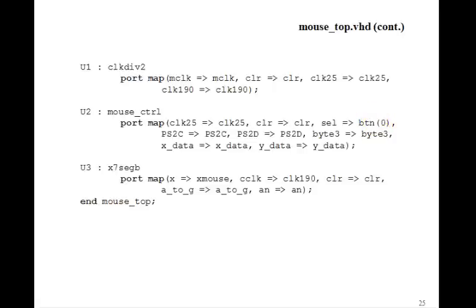This is the mouse controller. In the book there's another example of using this mouse controller to move the sprite initials from lesson 106. You could use this mouse controller to move any sprite on the VGA screen, including one from the block ROM. So if you made a little picture of yourself, you could move it around on the screen using this mouse. This concludes the lessons for this book. Good luck in writing your VHDL programs.